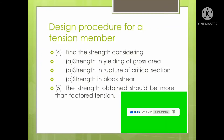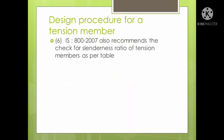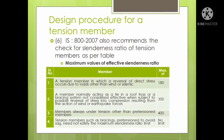There is one more concept for slenderness ratio. IS 800-2007 also recommends a check for the slenderness ratio of tension members as per the code table. For different members, different slenderness ratio values are specified. The first category is a tension member in which a reversal of direct stress occurs due to loads other than wind or seismic — for such members, the maximum slenderness ratio is 180.